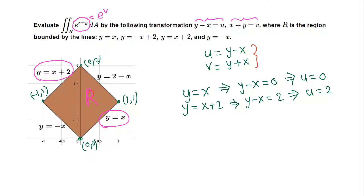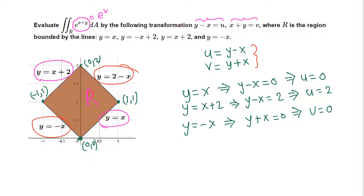Now for the other two lines. The line y equals negative x gives us y plus x equals 0, and since v equals x plus y, that means v equals 0. Finally, y equals negative x plus 2 gives v equals 2.